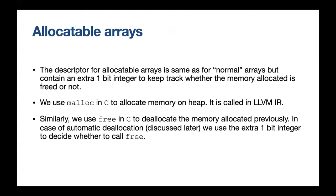Then come allocatable arrays. As mentioned earlier, the descriptor is almost the same with an extra one-bit integer. We use malloc in C to allocate memory on the heap for these arrays, called via LLVM IR. Similarly, we use free to deallocate the memory.